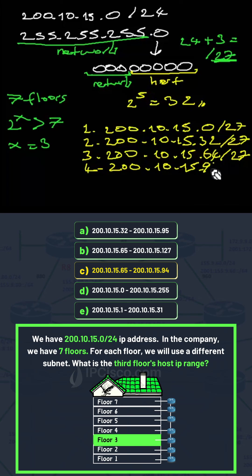The first IP address of the third range is the network address, and the last one is the broadcast address. So here our IP range is 200.10.15.65-94/27.